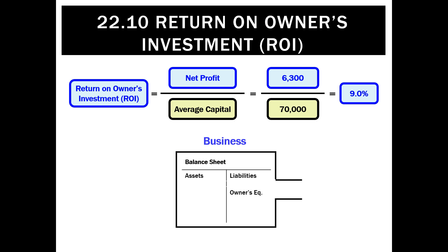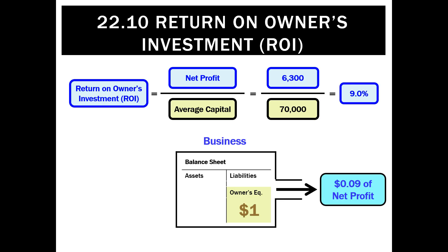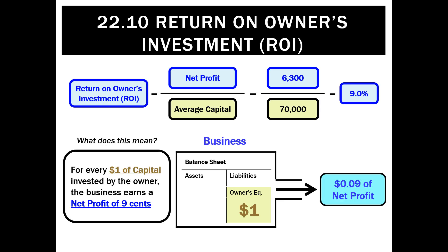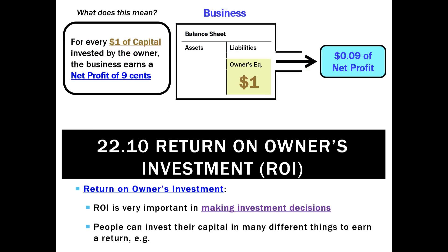So what does that mean? Well, it means that for every dollar of equity the owner puts into the business, that is earning a net profit of 9 cents. So if we were to write that up, this means that for every $1 of capital invested by the owner, the business earns a net profit of 9 cents.